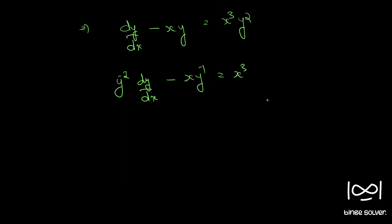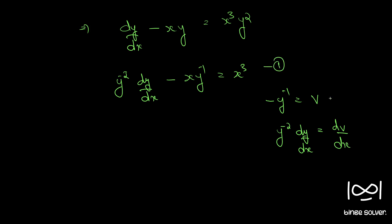This is in the Bernoulli's equation form. Now we will put the substitution: minus y raised to minus 1 equal to v, so that we have y raised to minus 2 dy by dx. If you differentiate both sides with respect to x we get this. Let's call this equation 1.